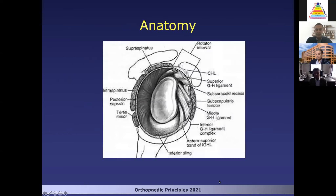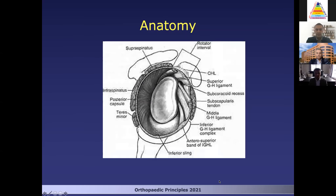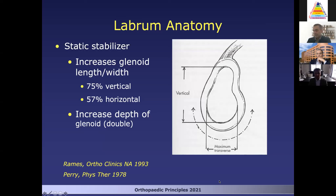So everyone is familiar with the anatomy. The big structure here to think about is your inferior glenohumeral ligament. As we'll talk about with HAGL lesions, the anterior and posterior bands are very important along with the labrum. They provide us a static stabilizer for the glenohumeral joint, as the labrum also increases the glenoid length, width, and depth. Along with the rotator cuff, they provide our stability in the shoulder. Despite this, we see a large portion of patients with instability, in large part because of the bony anatomy.